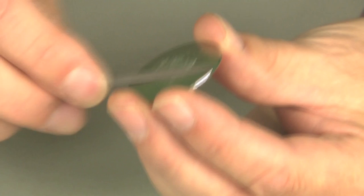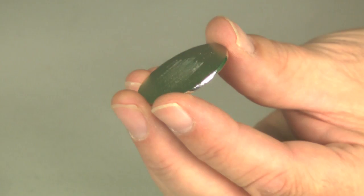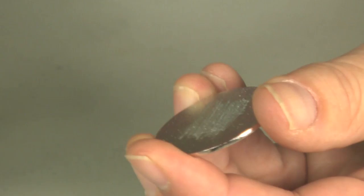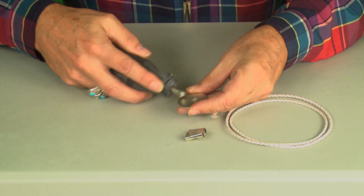You can scrape it with a piece of file. And here we go. There's a nice shiny metal surface there. We'll do the same thing on the clasp.